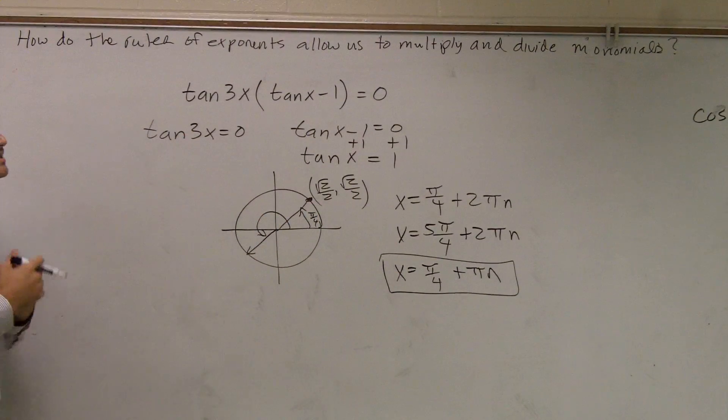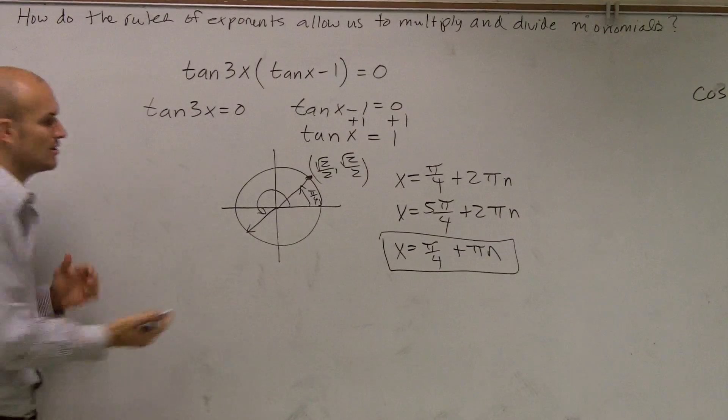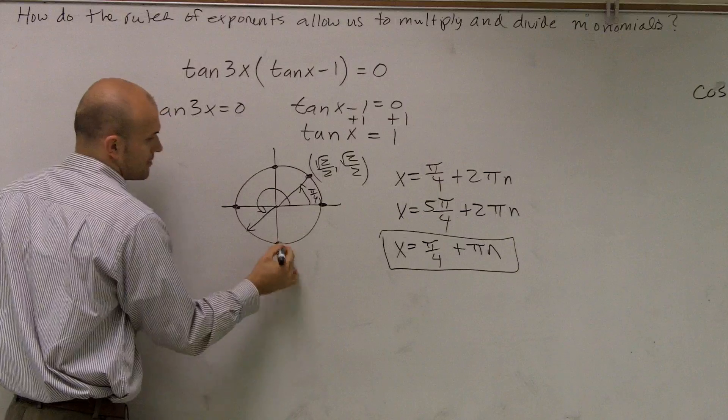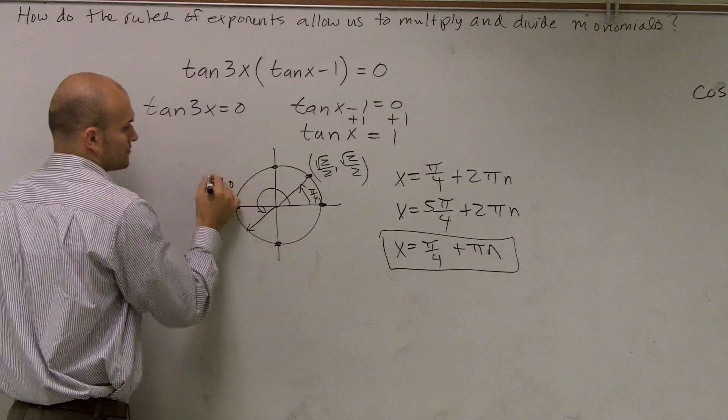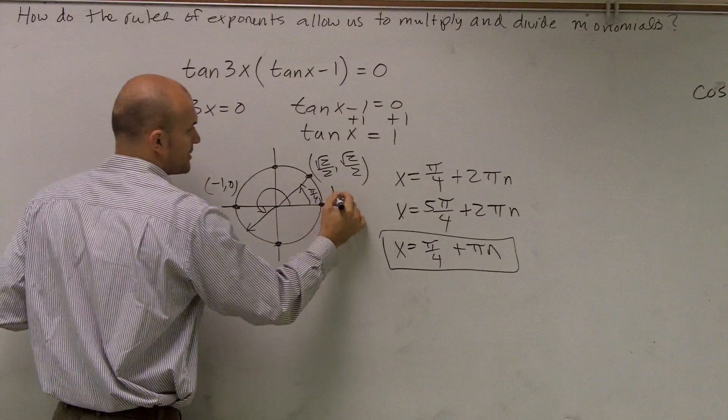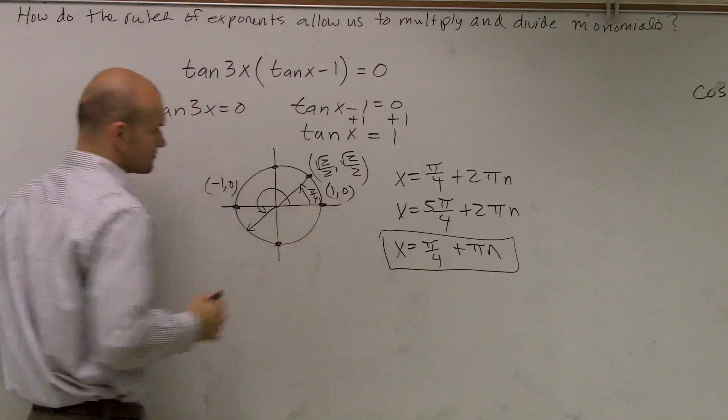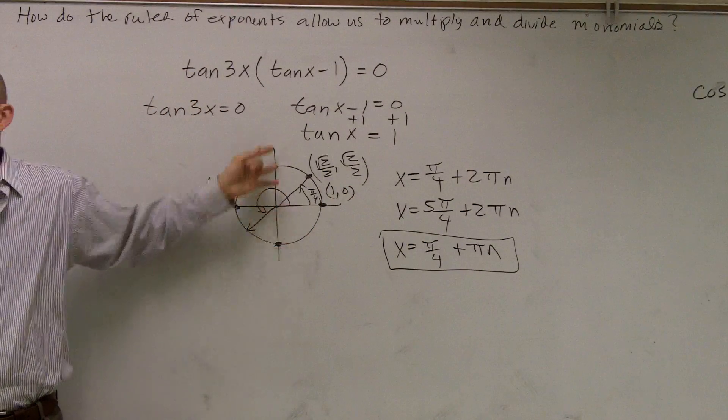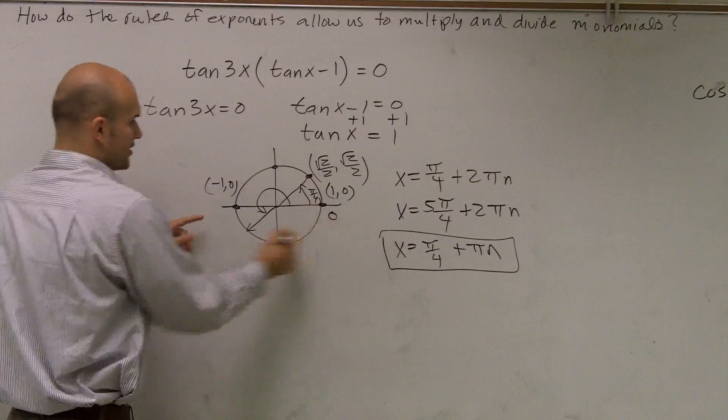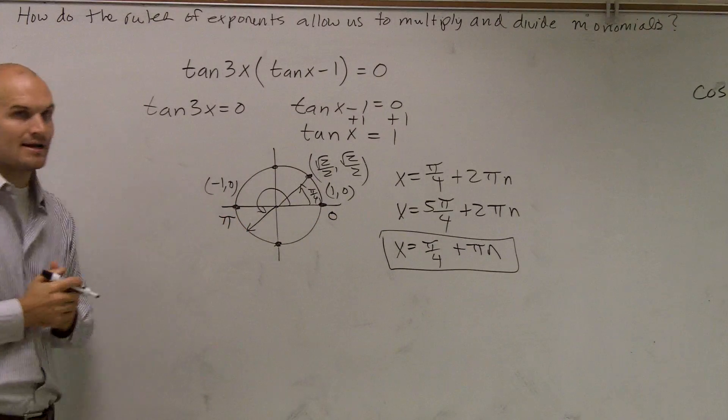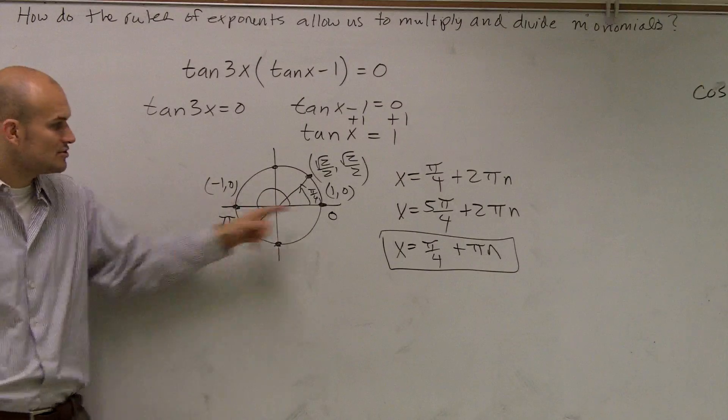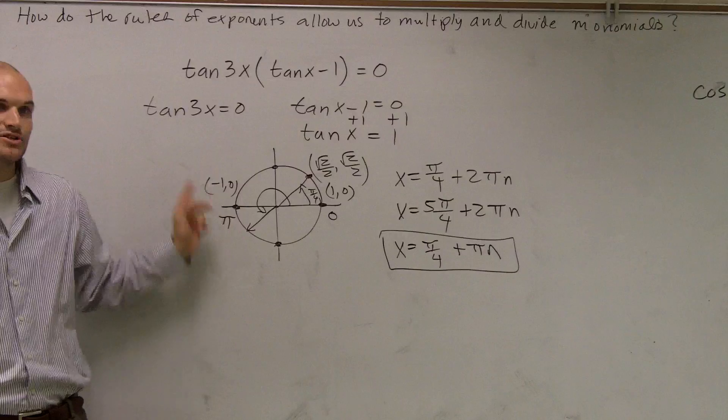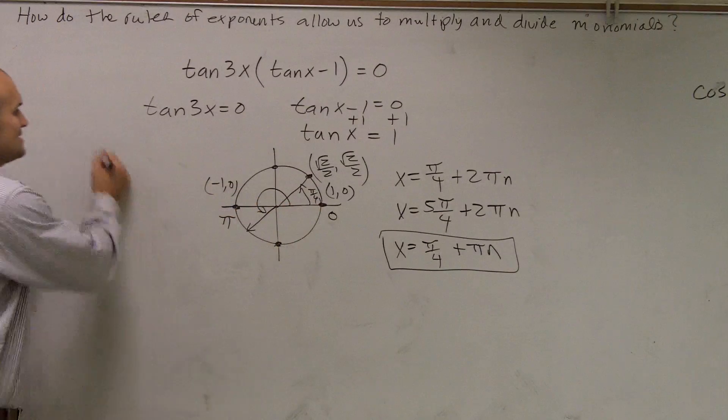Now we need to look at when does tan(3x) equals 0? Well, we look at our points, and here we're going to be 1, 0, and remember, these two would be undefined. So our two points are at 0 and π, and again, we come up to the same solution. We don't need to write 0 plus 2π, and then π plus 2π, because really,